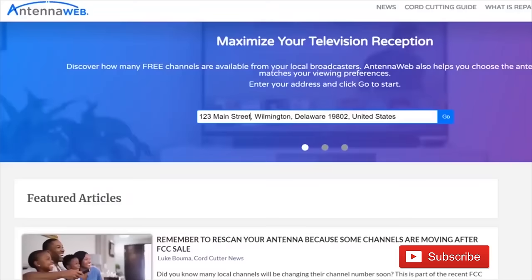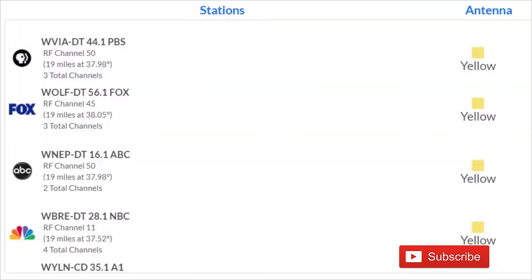To find out what channels your local TV stations are broadcasting on, go to antennaweb.org, type in your address and look for the RF channel number. The virtual channel is a channel that the station identifies as. So in my market, NBC28 WBRE. But the RF channel is the channel that they broadcast on.